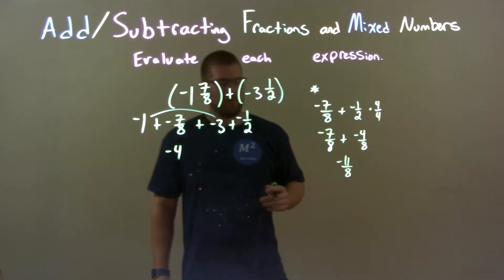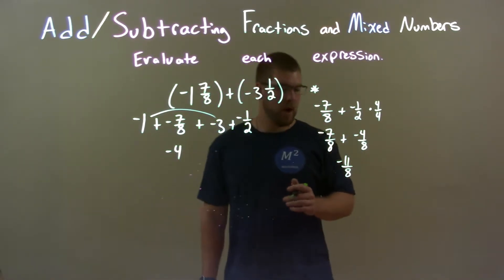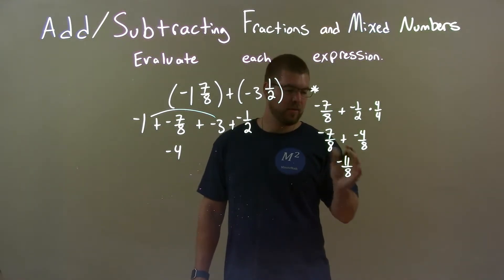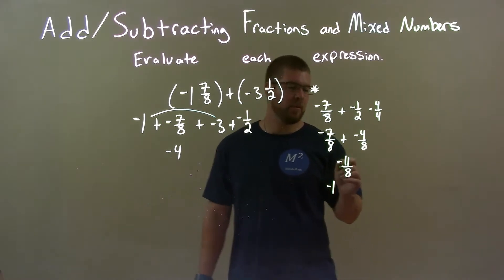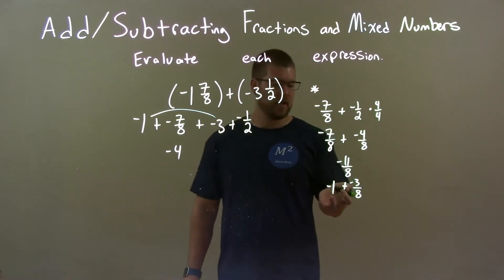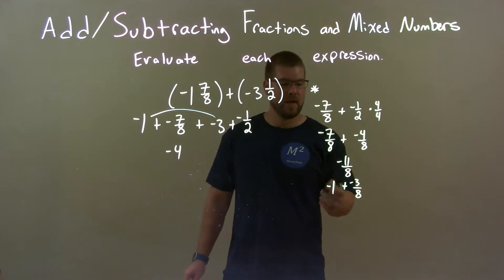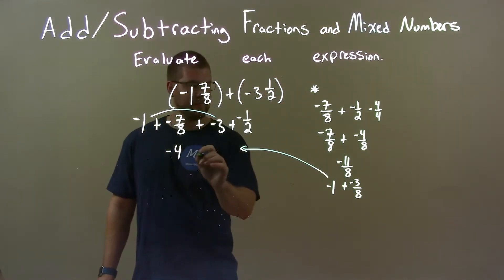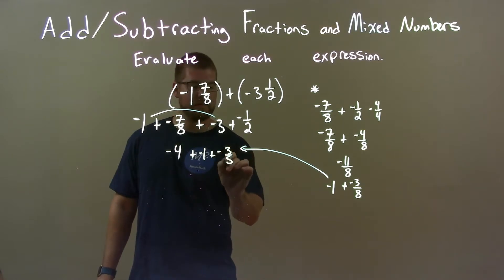Now, since that's an improper fraction, we want to make it a proper fraction. So, that's the same thing. We'll kind of break it down. 8 goes into 11 one time. So, we have a negative 1 there. And then what was left over would be 3. So, we have plus a negative 3 eighths. So, negative 11 over 8 is the same thing as negative 1 plus a negative 3 eighths. I bring over here plus a negative 1 plus a negative 3 eighths.